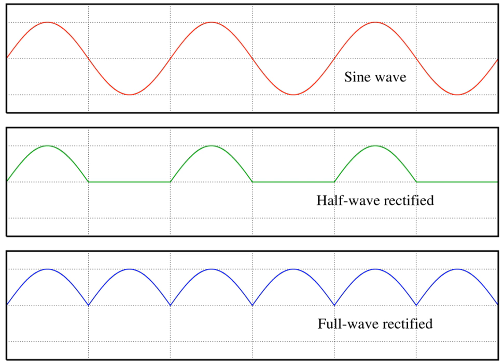In physics, a wave is a disturbance that transfers energy through matter or space, with little or no associated mass transport. Waves consist of oscillations or vibrations of a physical medium or a field, around relatively fixed locations.